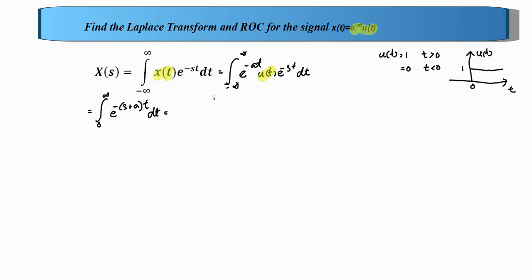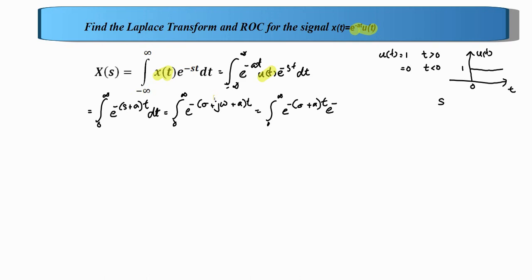We substitute s equal to sigma plus j omega. The integral becomes the integral from 0 to infinity of e raised to minus sigma plus a into t, times e raised to minus j omega t, dt. From this equation we can see that this is simply the Fourier transform — it is the Fourier transform of the signal multiplied by e raised to minus sigma t.